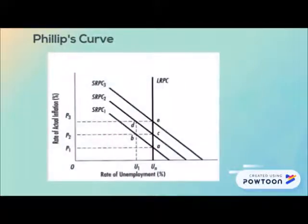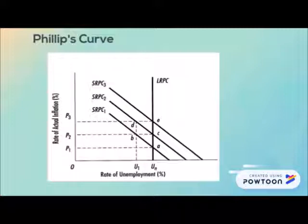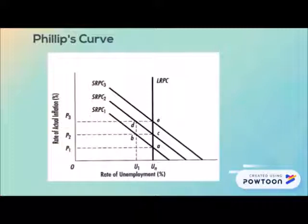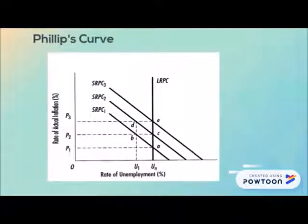Instead of the temporary increases in profits, output, and employment implied by the move from A to B in the figure, the economy moves directly from A to C. Expansionary fiscal and monetary policies directly and immediately boost the rate of inflation from P1 to P2, along the vertical long-run Phillips curve.